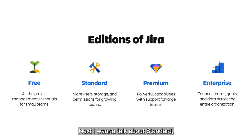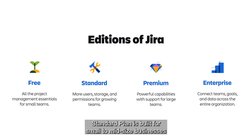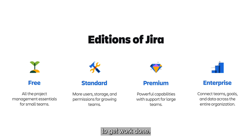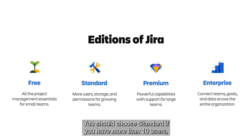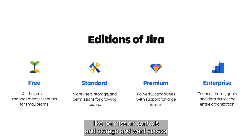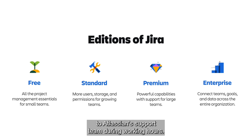Next, I want to talk about Standard, which is our most popular plan. The Standard plan is built for small to mid-sized businesses that are looking for a project management tool to get work done. You should choose Standard if you have more than 10 users and you need additional features like permission controls and storage, and want access to the Atlassian support team during working hours.